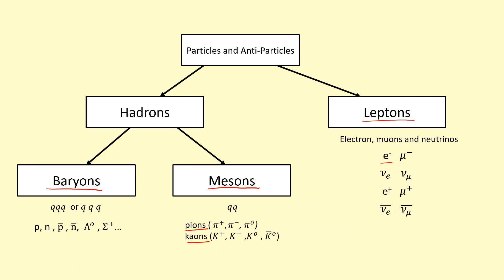Now what we're going to do is look at how charge, baryon number, lepton number, and strangeness have conservation laws, and we'll use those to see if different types of interactions can take place. In any interaction between particles, the following numbers must be conserved.